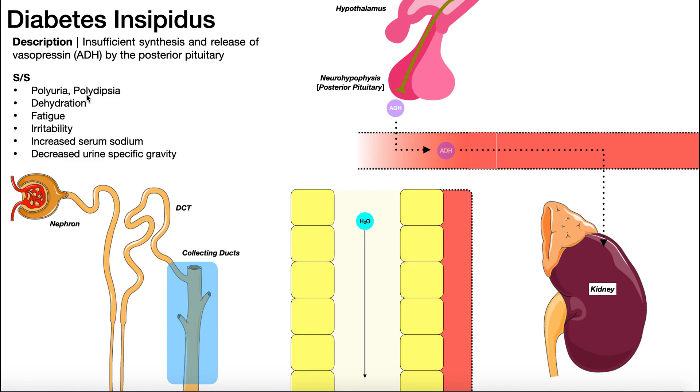You could imagine that being chronically dehydrated is going to lead to fatigue and irritability. But also because the blood is going to have a lower water concentration, because it's not being reabsorbed to the blood, it's staying in the filtrate, the serum or the blood is also going to have an increased sodium concentration. The collecting ducts here don't have any function for reabsorbing sodium. It's just water. So if we're not reabsorbing water here, we're going to have less water in the blood. And so that means a higher ratio of sodium to water, so higher serum sodium concentration.